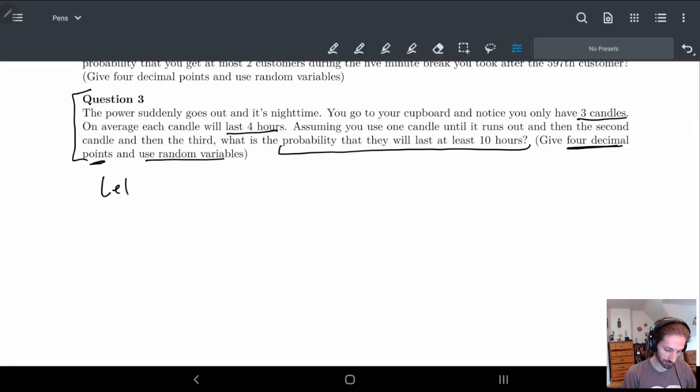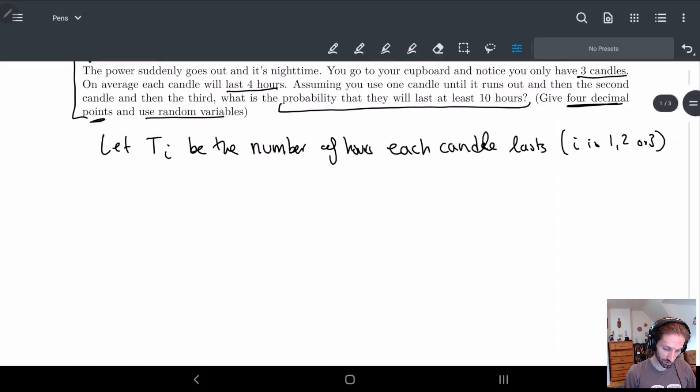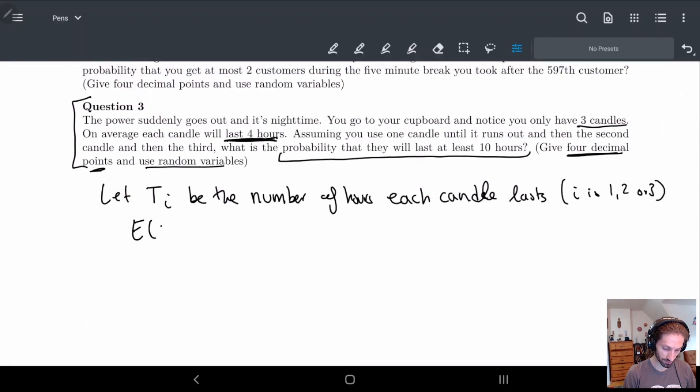So here we're going to let time, since we're looking with time we'll let t for time, Ti be the number of hours each candle lasts. Here we have i is 1, 2, 3 because we have the three different candles. We're told that they each last four hours, so the expected value of Ti is equal to 4 for every candle.